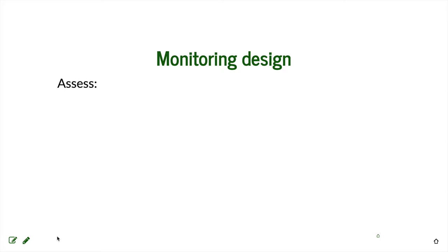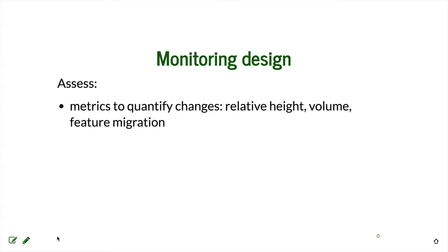When designing monitoring, we need to think about what quantified variables we want to monitor. We are not just collecting images or deriving digital elevation models — we need to define what will be derived from the data. For example, it could be relative height for crop growth monitoring, volume for mining, or certain feature migration such as shoreline position.